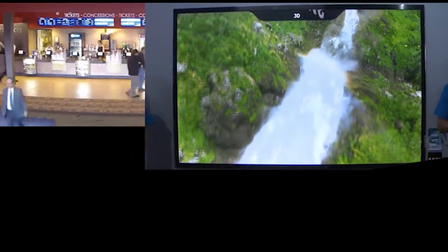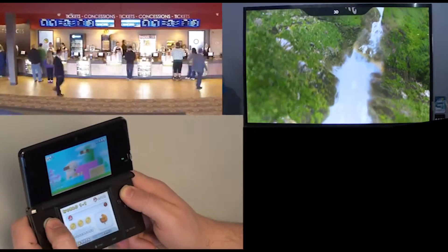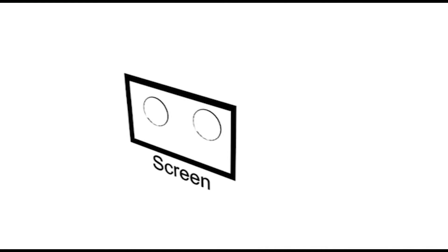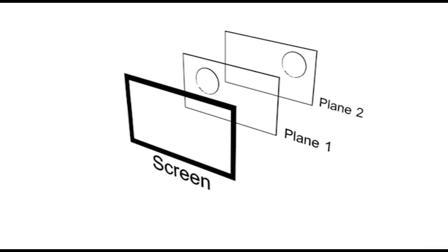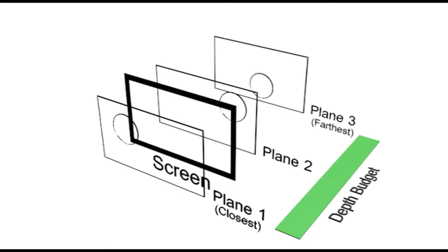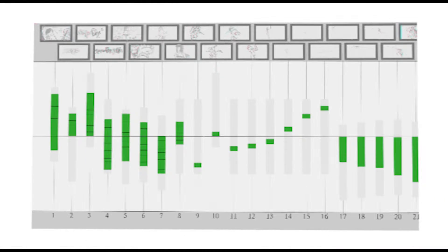Recently, there has been a resurgence in stereoscopic media. Yet, there are few tools to plan stereo 3D, which is different than 2D, as one needs to consider concepts such as object placement, plane separation, parallax position, depth budget, and depth scripts, to name a few.